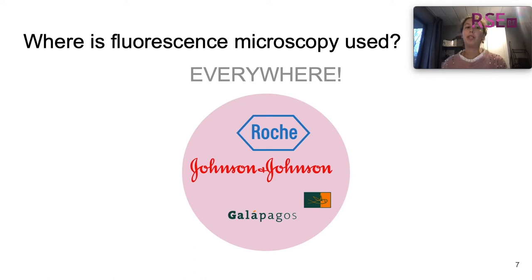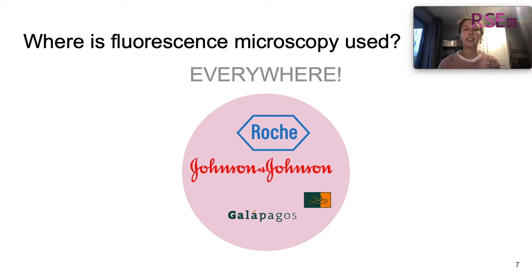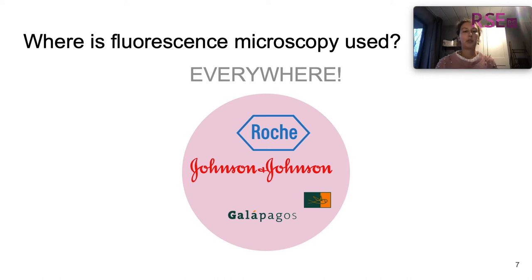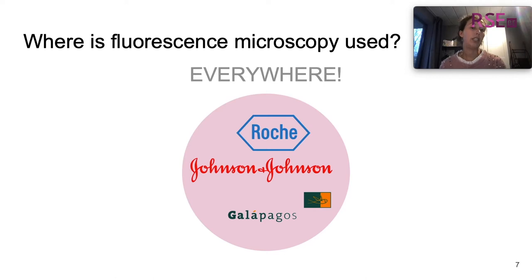You might not be very familiar with fluorescence or fluorescence microscopy, but actually it is used everywhere. Only at KU Leuven, every biology lab has at least one fluorescent microscope. Companies such as Roche, Johnson and Johnson, Galapagos and others all use fluorescent microscopes to do research and develop their products. For instance, in their race in looking for a corona vaccine, they all use fluorescent microscopes.